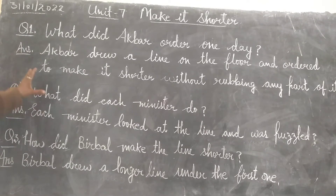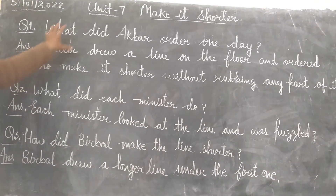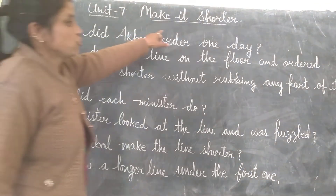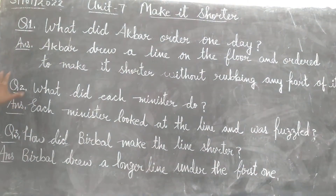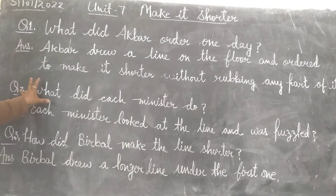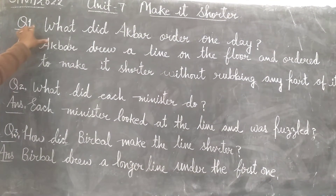In class 2nd, today class 1 English. Question answer 7, make it shorter. This is a chapter and this is a question. Question number 1.